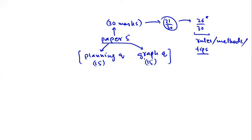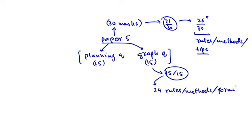Let's look at the questions of paper 5 now. We will look at the graph question first because it is a question in which you can always score full marks — 15 out of 15. To score full marks, you have to know 24 rules, methods, and formulas. The good news about these 24 rules is they are all mathematical in nature — no physics knowledge is required.